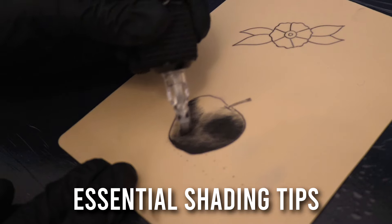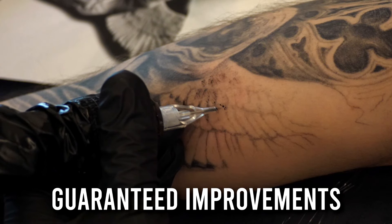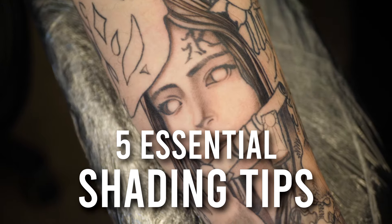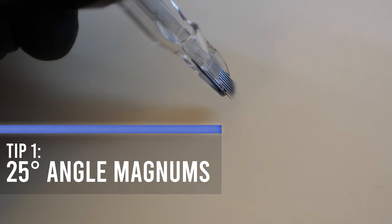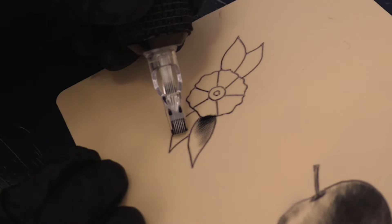In today's video we are looking at five essential shading tips for guaranteed improvements in your tattoos. So the first tip I want to share with you guys is that you should use magnum shaders at a 25 degree angle.